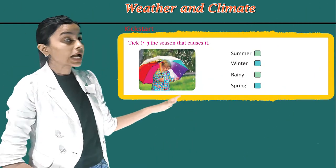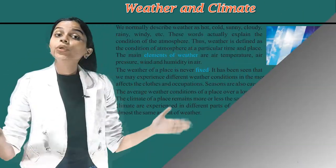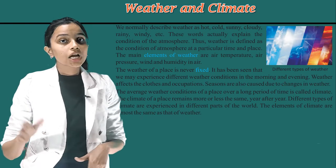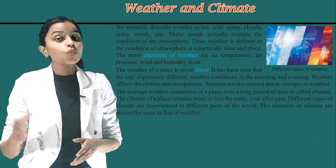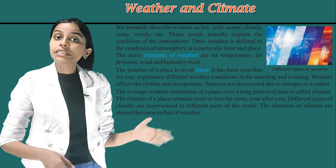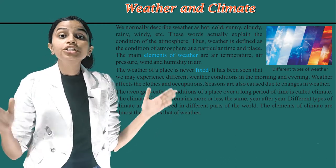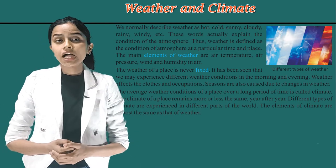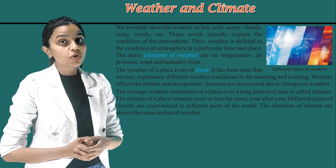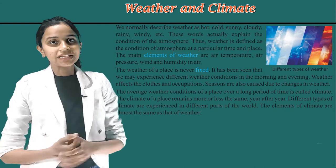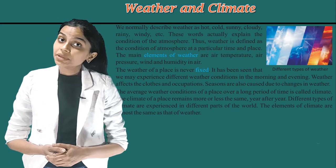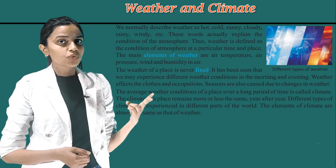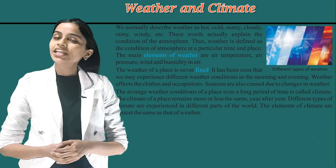We normally describe weather as hot, cold, sunny, cloudy, rainy, windy, etc. These words actually explain the condition of the atmosphere. Thus, weather is defined as a condition of atmosphere at a particular time and place. The main elements of weather are air temperature, air pressure, wind, and humidity in air.